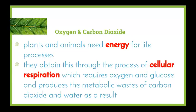Plants and animals need energy for life, and they obtain this energy through cellular respiration. Cellular respiration takes place in every cell of our body in the mitochondria. It requires oxygen and glucose and produces the metabolic wastes carbon dioxide and water. Both plants and animals undergo respiration. Note that photosynthesis only takes place in plants and only during daylight hours, whereas respiration takes place over a 24-hour period.